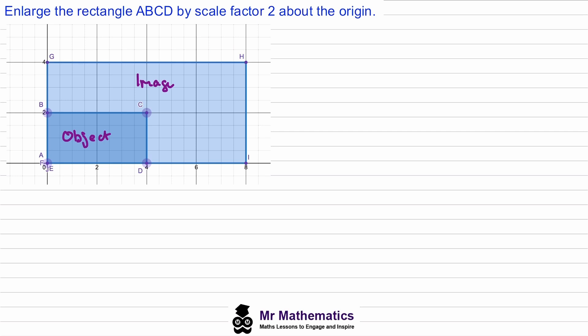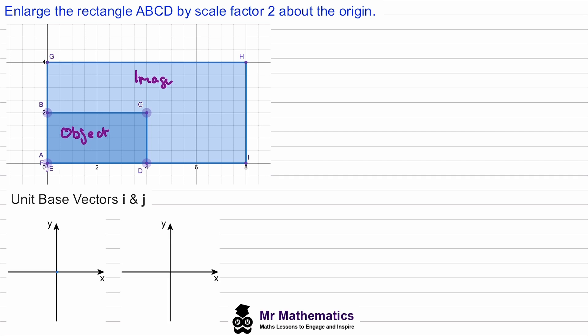When we use matrices to perform transformations, rather than transforming each of these individual vertices, it's much simpler to transform the unit base vectors i and j. We know that i has coordinates (1, 0) and j has coordinates (0, 1).